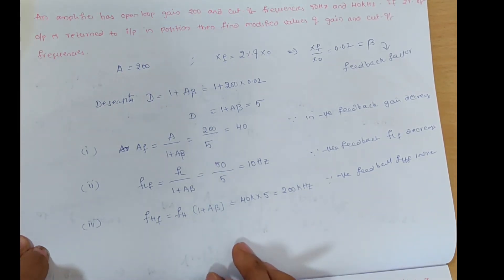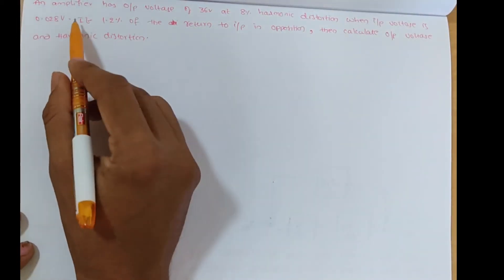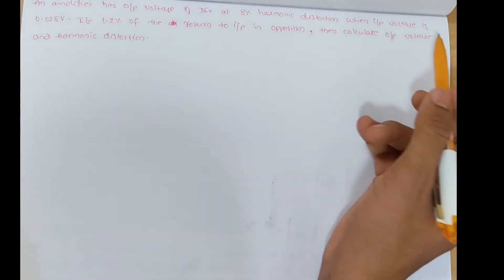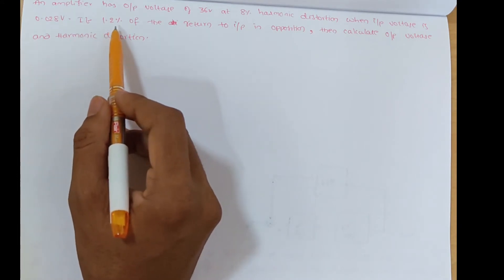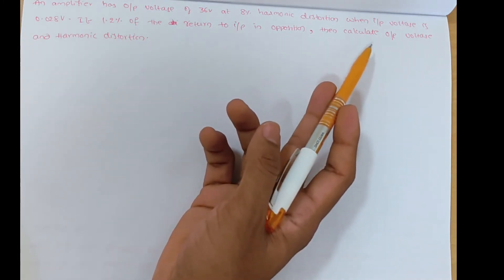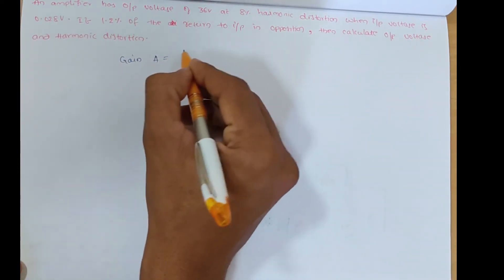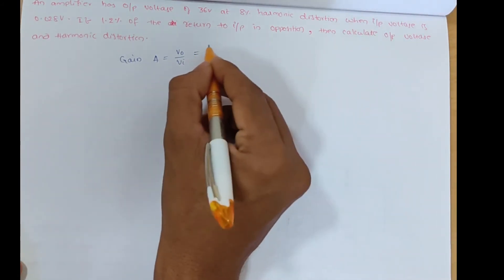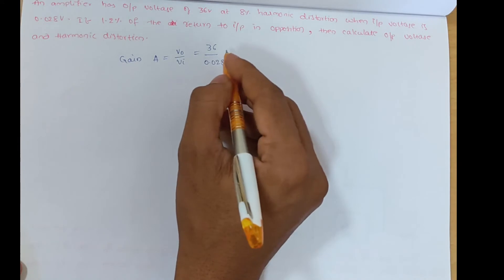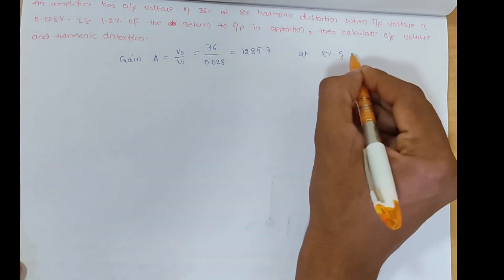In this way we can calculate feedback amplifier gain, lower cutoff frequency, and upper cutoff frequency. Next problem: An amplifier has output voltage of 36 volts at 8% harmonic distortion when the input voltage is 0.028 volts. If 1.2% of output is returned to the input in opposition, calculate the output voltage and harmonic distortion. Gain A = V0/Vi = 36/0.028 ≈ 1285.7, at 8% harmonic distortion.